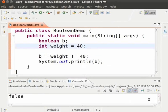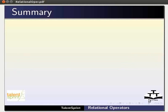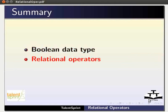And this is how we use the various relational operators to compare data in Java. This brings us to the end of the tutorial. In this tutorial we have learnt about the boolean data type, the relational operators, and how to use relational operators to compare data.